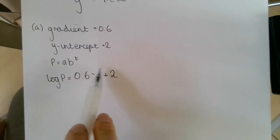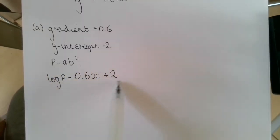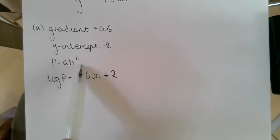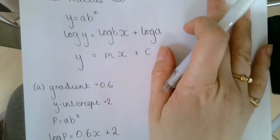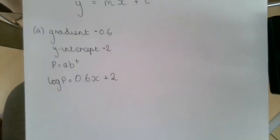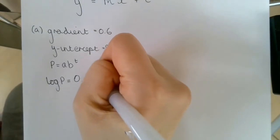So the reason why we have used this form here is because we have been told that the growth can be modeled in this form, that form y equals ab to the power of x. Sorry, that should be a t there, not an x.